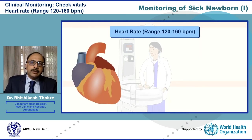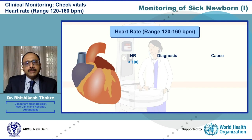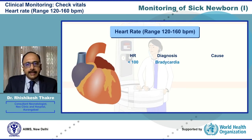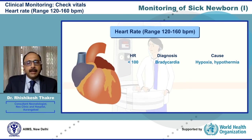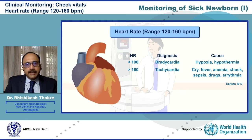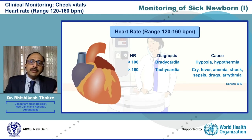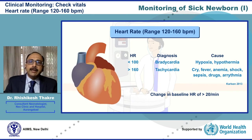Let's look at the heart rate. The heart rate is normally in the range of 120 to 160 beats per minute. A heart rate less than 100 indicates bradycardia, and the common cause of bradycardia in the newborn is hypoxia. A heart rate more than 160 beats per minute suggests tachycardia — it could be because of crying, fever, anemia, shock, sepsis, drug toxicity or an underlying rhythm disorder. It is equally important to note that even if the heart rate is in the normal range, a change in baseline heart rate of more than 20 beats per minute is abnormal and one would need to find an underlying cause.